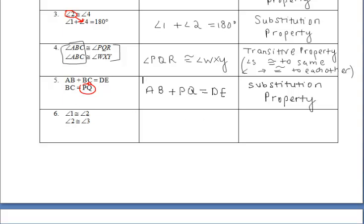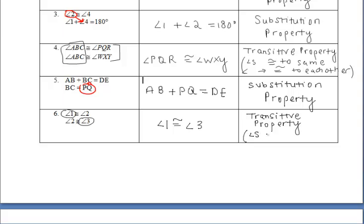Last but not least, we have angle 1 congruent to angle 2, and angle 2 is congruent to angle 3. Therefore, angle 1 must be congruent to angle 3 because of the transitive property. We have two angles that are congruent to the same exact angle, so they are congruent to each other. Both angles 1 and 3 are congruent to angle 2, so therefore they're congruent to each other. Let's pick back up and go to the second part of the notes in just a moment.